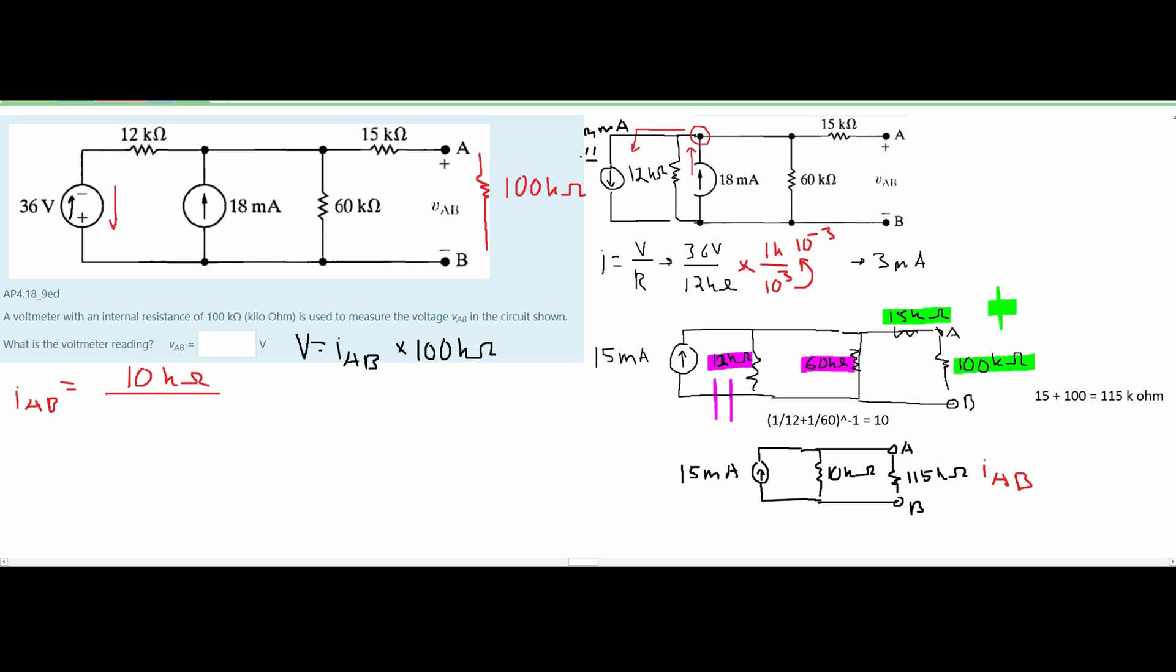And this is over both of the currents added together so 115 kiloohms plus 10 kiloohms. That's going to give us 125 kiloohms and this is being multiplied by the source current which is 15 milliamps.